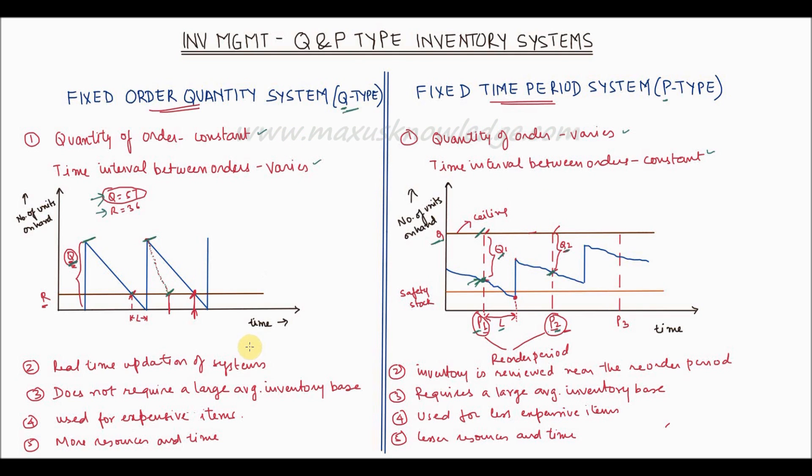Now let us understand some other differences in these two types of systems. Since the system is triggered based on the quantity on hand, the records must be updated in real time to ensure that the reorder point has not been missed. So it is very important to have real time updation of these systems.